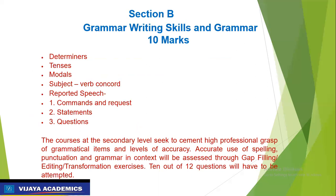Section B covers Writing Skill and Grammar. The Grammar portion carries 10 marks and contains determiners, tenses, modals, subject-verb concord, and reported speech. Under reported speech, the subcategories are commands and requests, and statements and questions.